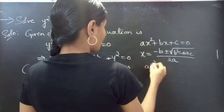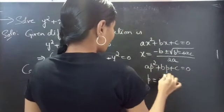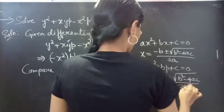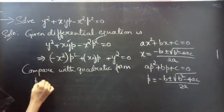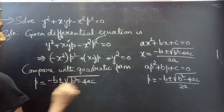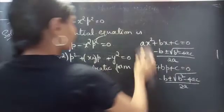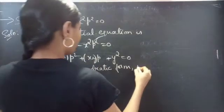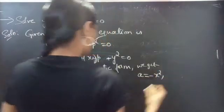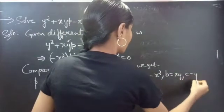If we consider the quadratic equation in p, we have ap squared plus bp plus c equals 0, then p equals minus b plus or minus square root of b squared minus 4ac, divided by 2a. By comparing our equation with this quadratic form, we get a equals minus x squared, b equals xy, and c equals y squared.